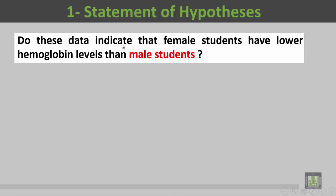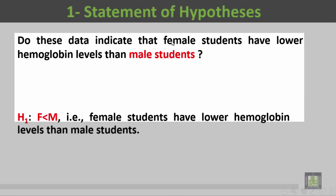The research question is similar to the alternate hypothesis. In this case, H1, or the alternate hypothesis, will be that females have less hemoglobin than males — just similar to the research question: female students have lower hemoglobin levels than male students. The H1 is similar to the research question, so H1 will be: female students have lower hemoglobin level than male students.